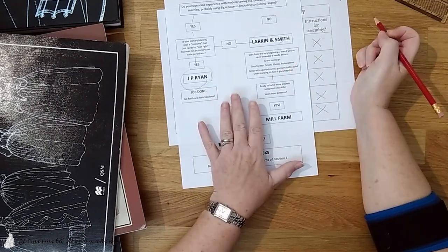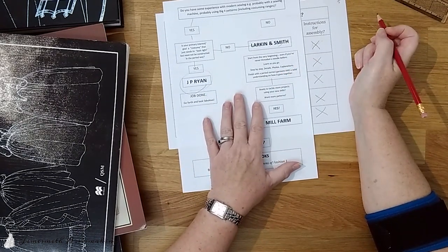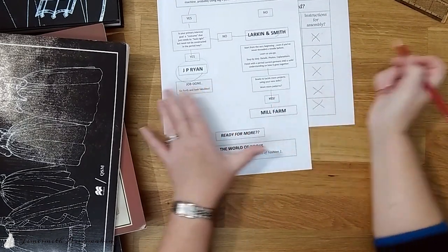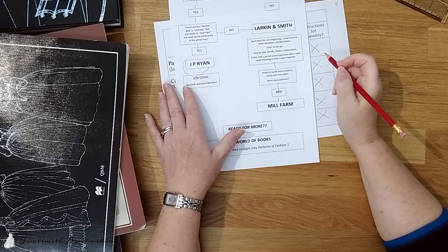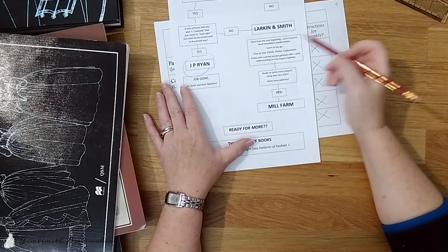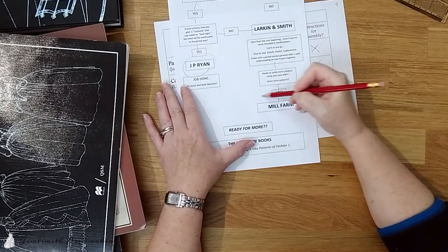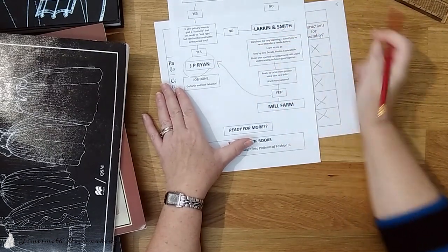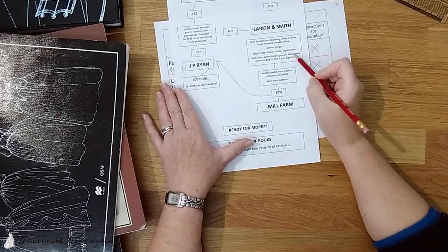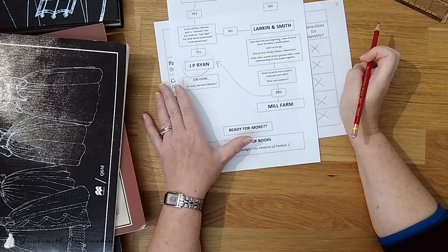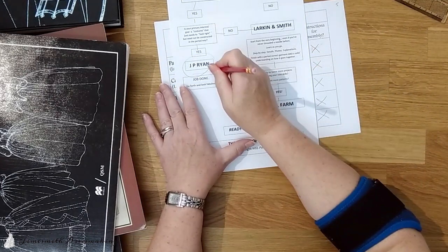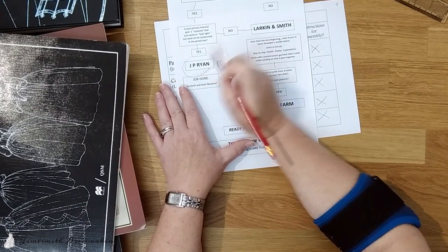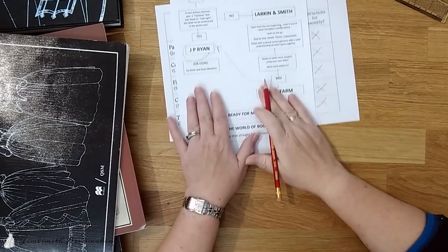Once you've done that, are you ready to tackle more projects using your new skills? Want more patterns? Yes. Mill farm. Go try out some mill farm. But, don't forget, with those skills, you can go back to JP Ryan. Just take the pattern pieces. Use what you've learned. Same order of construction, sewing methods, seaming techniques. You can make that JP Ryan pattern look historically accurate. Are you ready for more? That's where the books come in.